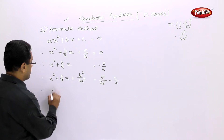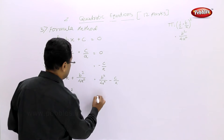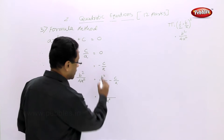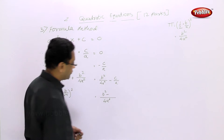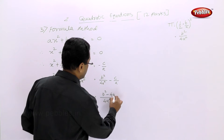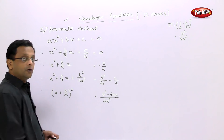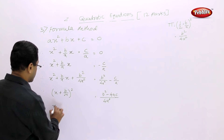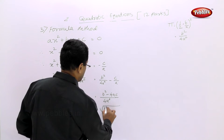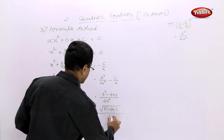The left-hand side is now a complete square: (x + B/2A)². On the right-hand side, taking 4A² as LCM, we get (B² − 4AC)/4A². Taking the square root of both sides gives x + B/2A = ±√(B² − 4AC) / 2A.